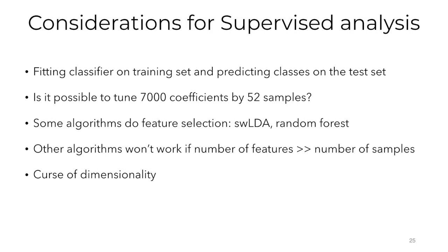There are many considerations that should be made for supervised analysis. First, we should fit our classifier on a training set and predict the classes on the test set. We also have to determine if it's possible to tune 7,000 coefficients by 52 samples. Some of the algorithms do feature selection, such as SWLDA and Random Forest. However, other algorithms won't work if the number of features is in great excess to the number of samples. And then, there's the curse of dimensionality.